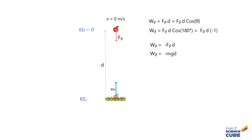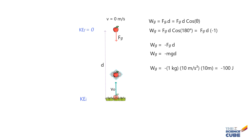So the work done by gravity equals minus mgd, because the force of gravity is the product of mass and gravitational acceleration. If the apple has a mass of 1 kg, displacement is 10 m, and g is 10 m/s², then work done by gravity W = −1 × 10 × 10 = −100 joules. The minus sign tells us that during the apple's rise, the gravitational force transfers 100 joules of kinetic energy out of the apple, consistent with the apple slowing down.